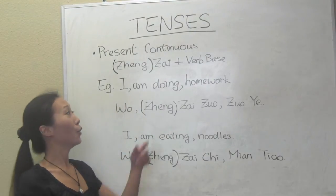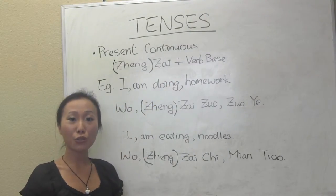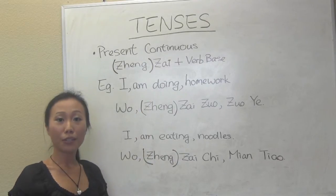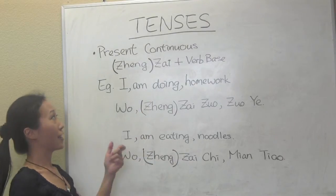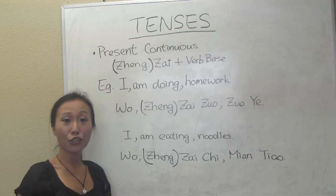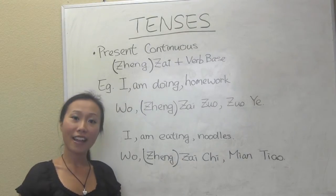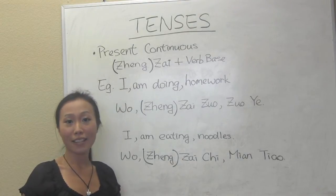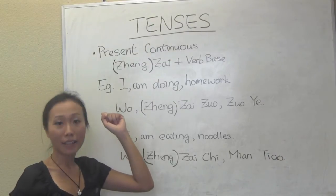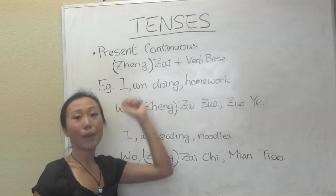Very simple. Remember, we always use the verb base for the simple present tense. But for the continuous tense, perfect tense, past tense, or future tense, we just need to add an additional word with the verb base.